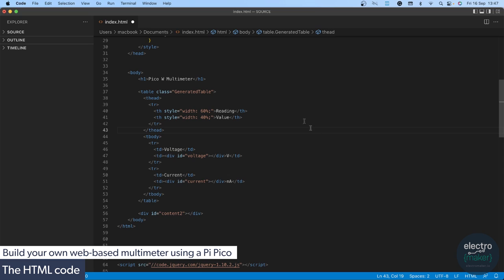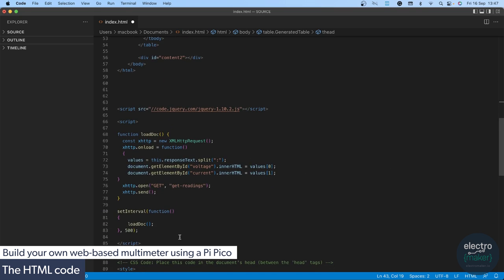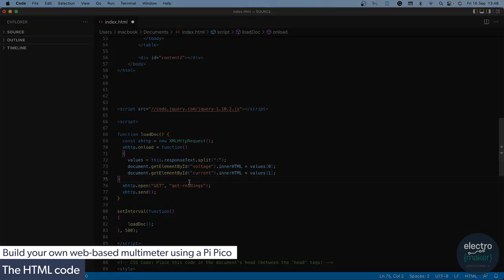So just to recap, this is the index.html file that's given to us by the Raspberry Pi Pico W when we first connect with a browser. Once we receive this file, our browser every 500 milliseconds requests new data from the Raspberry Pi Pico W using an HTTP request and passing the get readings variable, so that it passes us the voltage and current readings instead of the index.html file again.